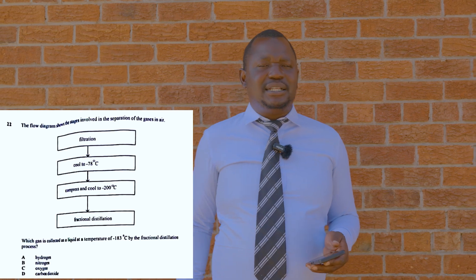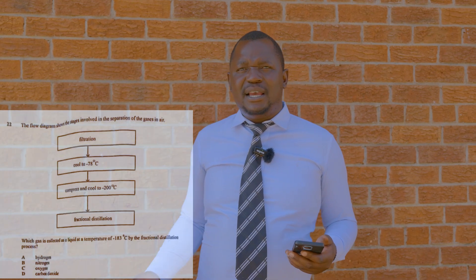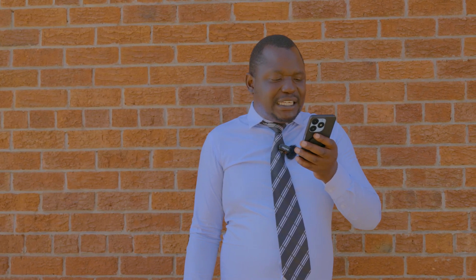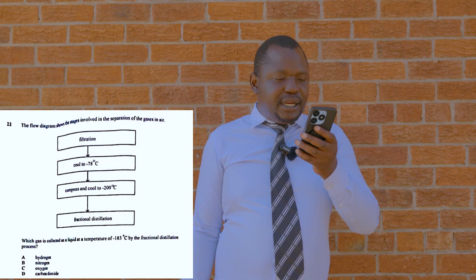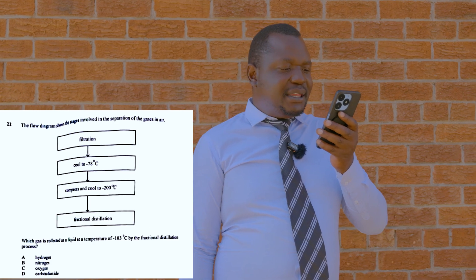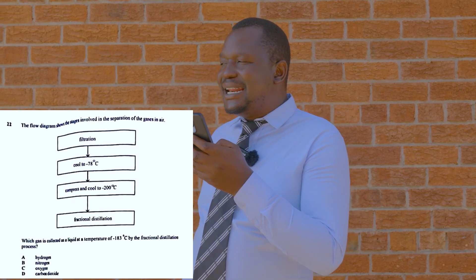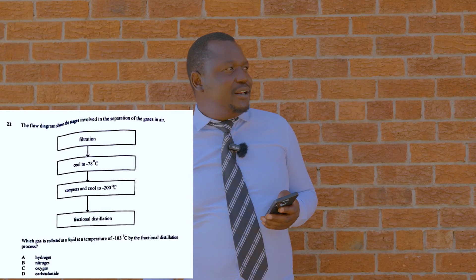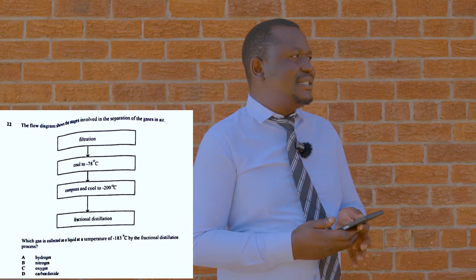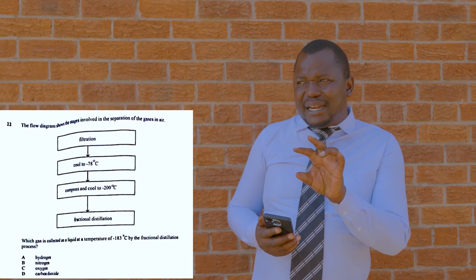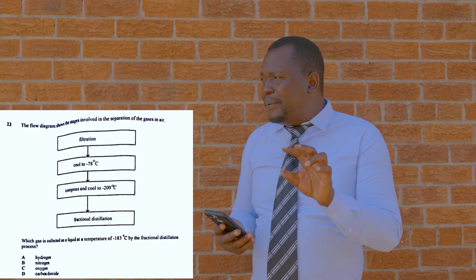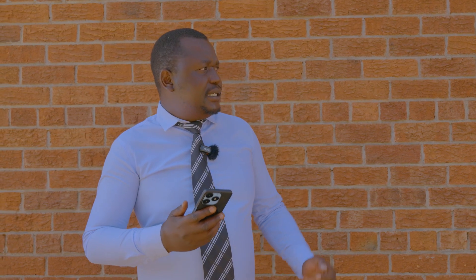This process can be used to obtain nitrogen, which reacts with hydrogen to produce ammonia in an irreversible exothermic reaction. The question asks which gas is a liquid at minus 183°C during fractional distillation. At minus 183°C, nitrogen vaporizes, so nitrogen is a gas at that temperature in the fractionating column. Oxygen, however, liquefies at that temperature — approximately minus 183°C.